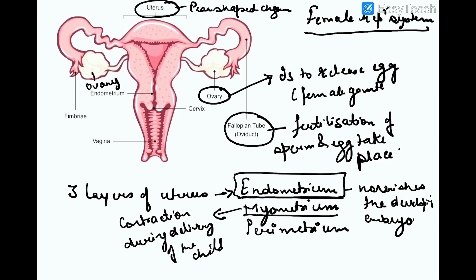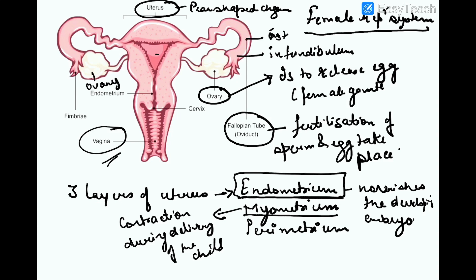The uterus opens into the vagina, which is a muscular narrow tube. The fallopian tube consists of three parts: the infundibulum, the isthmus, and the ampulla.